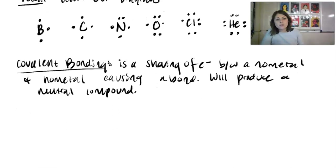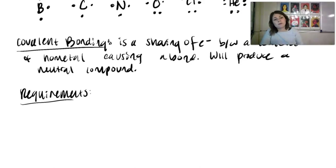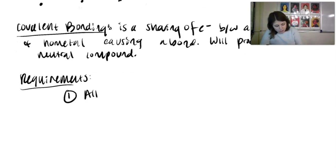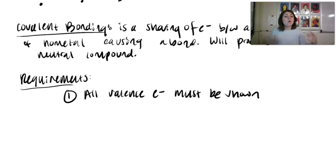There are a few requirements before starting Lewis structures — things to keep in the back of your mind when drawing. The first requirement: all valence electrons must be shown. They can be shown either as a lone pair, which is just two dots, or in an actual bond, which is represented by a line. Overall, we should see all the valence electrons.